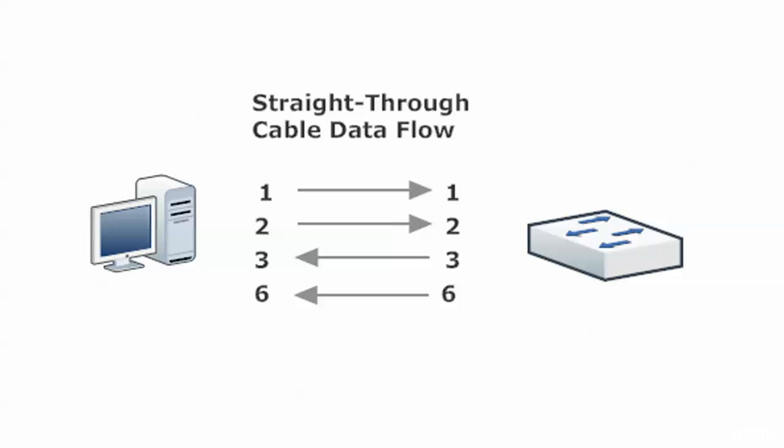And there's your straight-through cable data flow. Your host is talking on pins 1 and 2. Your switch is listening on 1 and 2. The switch is talking on pins 3 and 6, and the host is listening on pins 3 and 6, the PC. So we are all set there.